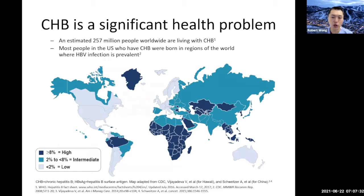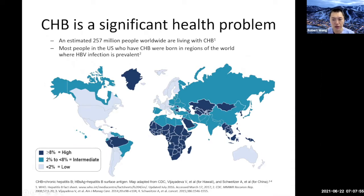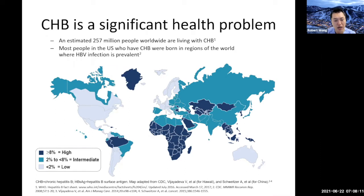This is a global map showing the burden of hepatitis B. The darker the color represents higher prevalence. Sub-Saharan Africa, a lot of the Asia-Pacific region, and also parts of South America have really high prevalence of hepatitis B. It's important to understand this because it drives home the main message of education, raising awareness, and timely screening so we can diagnose these patients, monitor, and plug them into appropriate management.